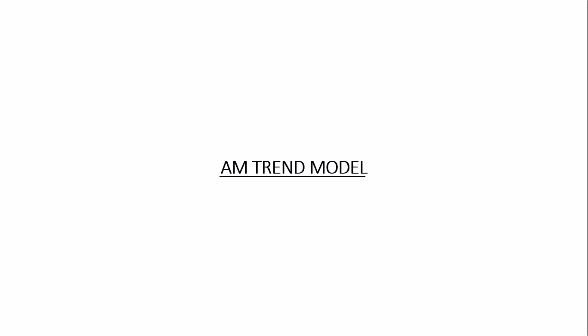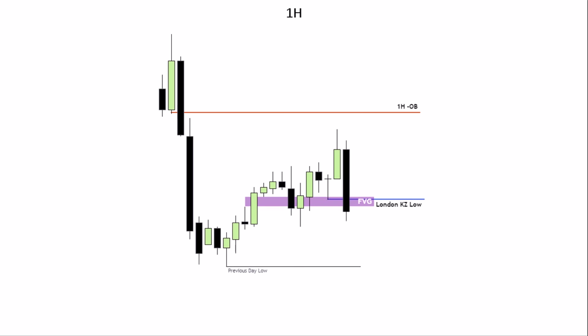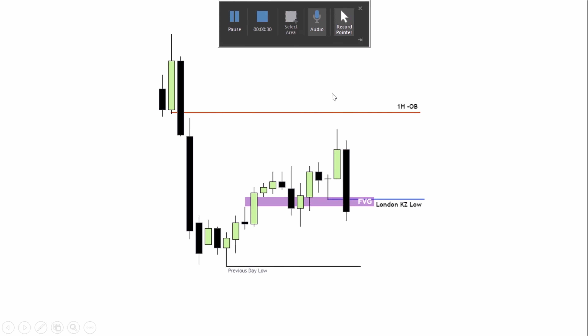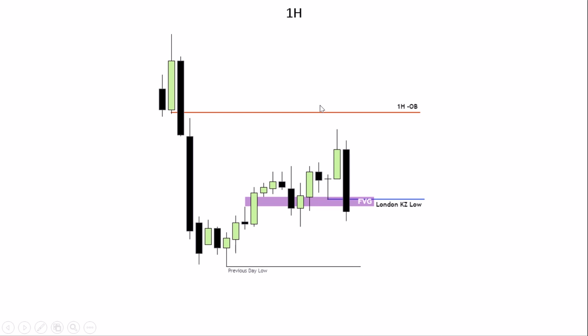This one is pretty simple and fixed — it can be your bread-and-butter setup. In simple terms, you're only utilizing a maximum of the four-hour time frame and below, because this is an intraday profile whereby the AM trend forms between the opening of the futures market at 9:30 New York time all the way to noon. We're looking for trading setups between 10 AM and 11 AM.